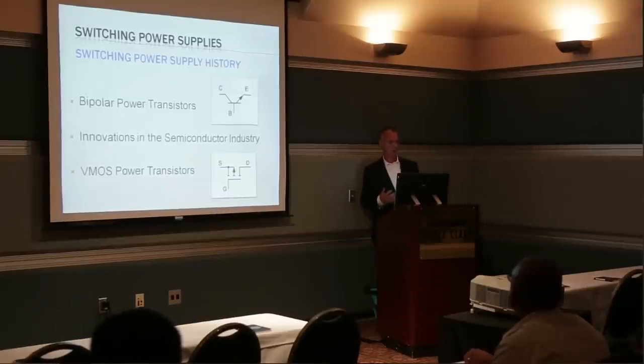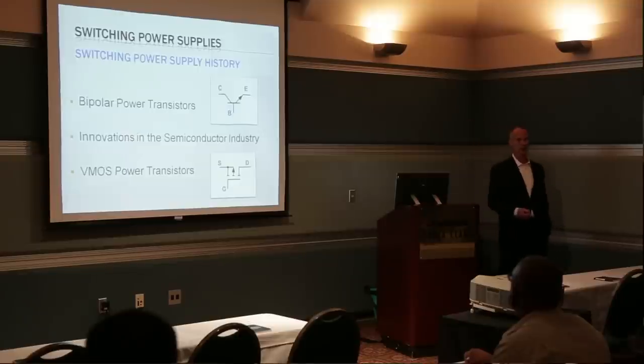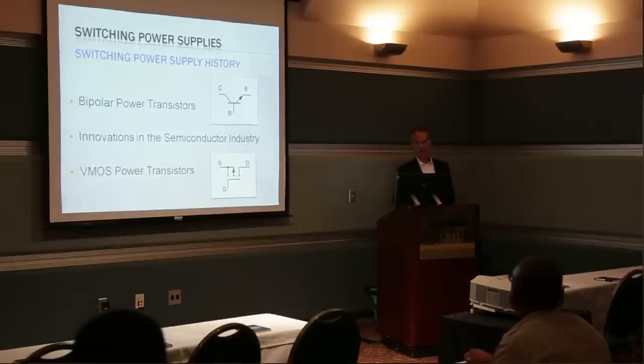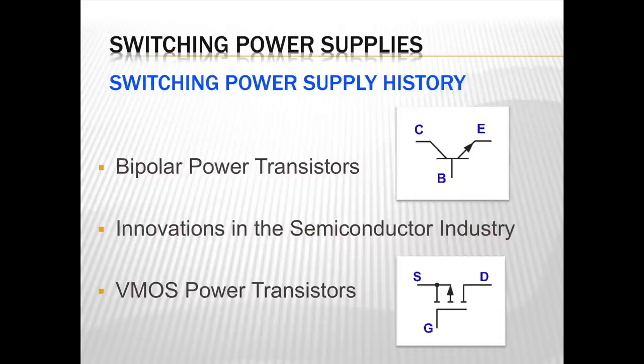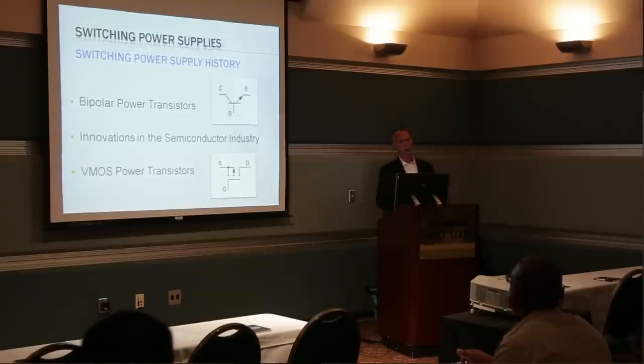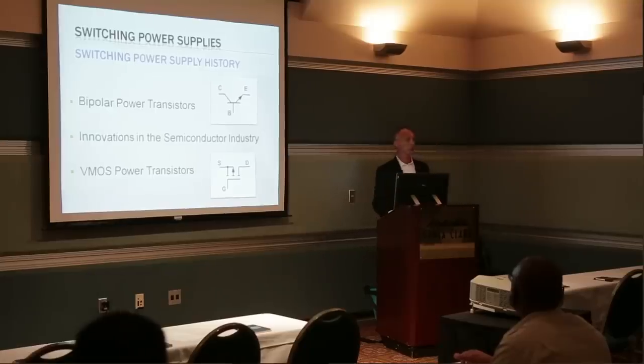What really should be credited with the explosion of switching power supply popularity are innovations in the semiconductor industry — the controller chips that control the switching power supply and make them efficient. Also needed was a power switch capable of quickly switching high currents. The vertical metal oxide semiconductor power transistor — VMOS, a fab process term — enabled this quick switching. Previously, bipolar transistors were used and worked for high-power applications, but didn't switch fast enough, causing audible squeals. Now frequencies are much higher and far more efficient.